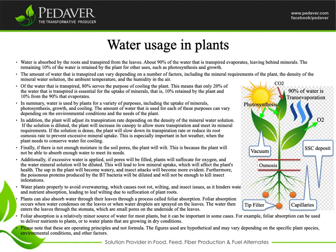Plants can also absorb water through their leaves through a process called foliar absorption. Foliar absorption occurs when water condenses on the leaves or when water droplets are sprayed on the leaves. The water then enters the leaves through the stomata, which are small pores on the underside of the leaves.